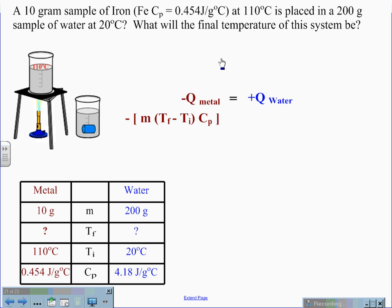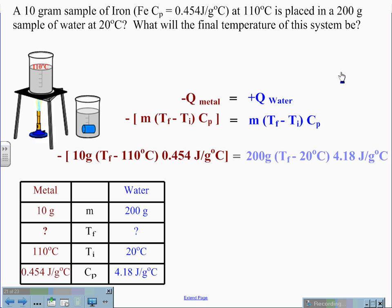Q can be found by taking the mass times the final temperature minus the initial temperature times the specific heat. This side is negative because the metal will be losing heat. The water side is mass times TF minus Ti times the CP. When we plug in the values, we get negative bracket 10 grams times TF minus 110 degrees Celsius close the parentheses times 0.454 joules per gram degrees Celsius equals 200 grams times TF minus 20 times 4.18 joules per gram degrees Celsius.